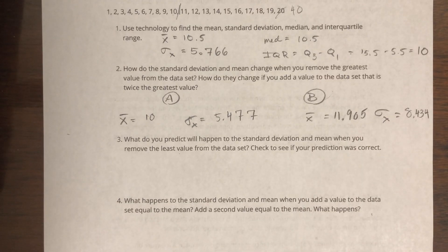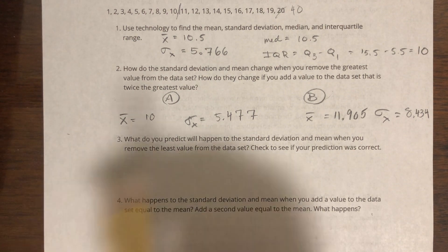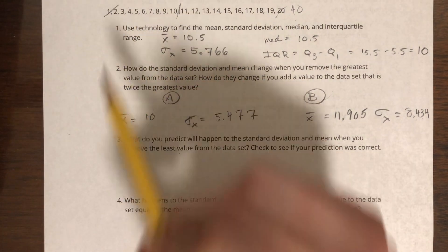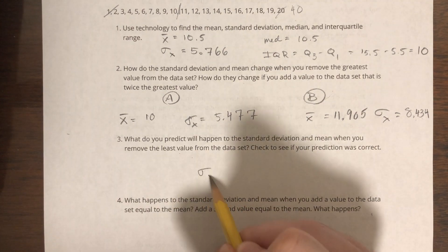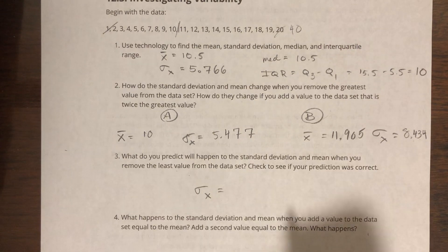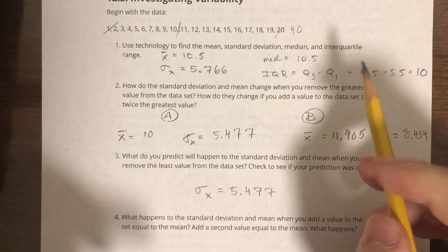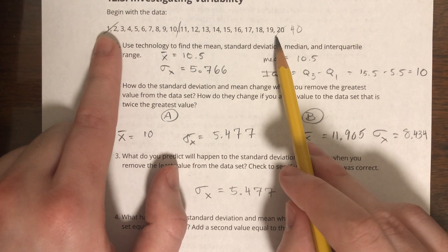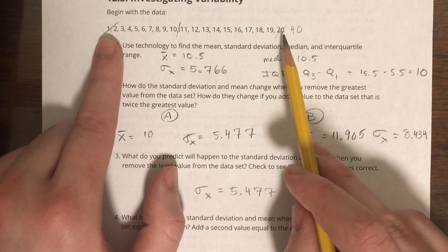Question 3: what do you predict will happen to the standard deviation and mean when you remove the least value from the data set? Check to see if your prediction was correct. So make a prediction. So I'm going to predict that if I remove the least value, if I remove 1, I think my standard deviation is actually going to be the same as it was up here. I think it's also going to be 5.477.